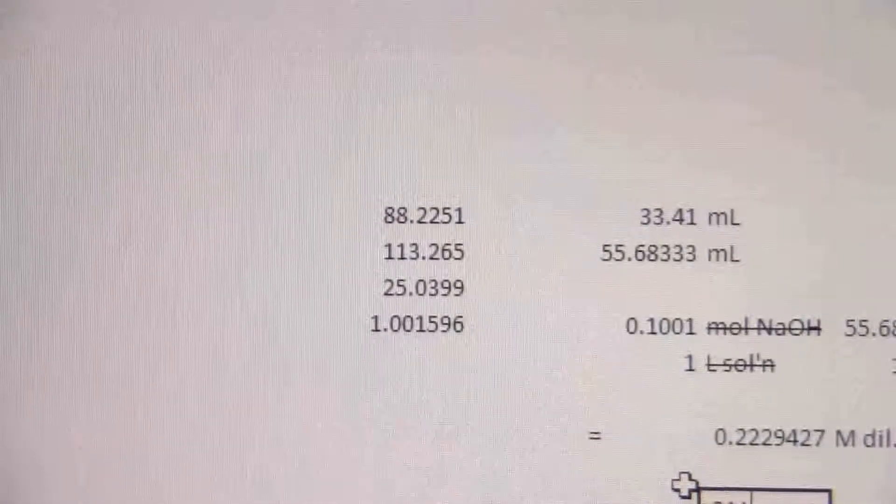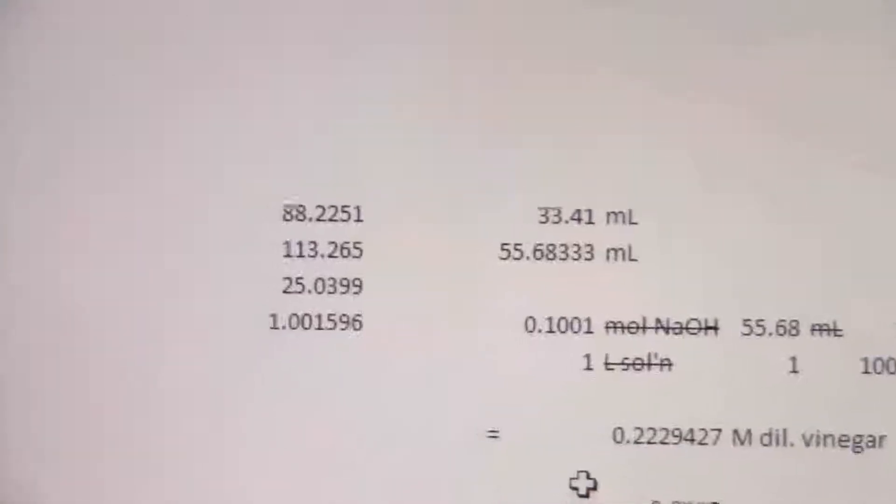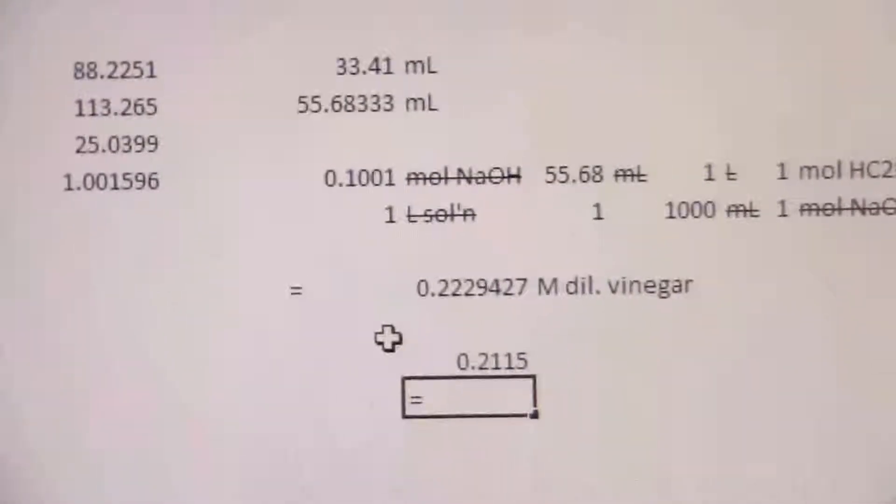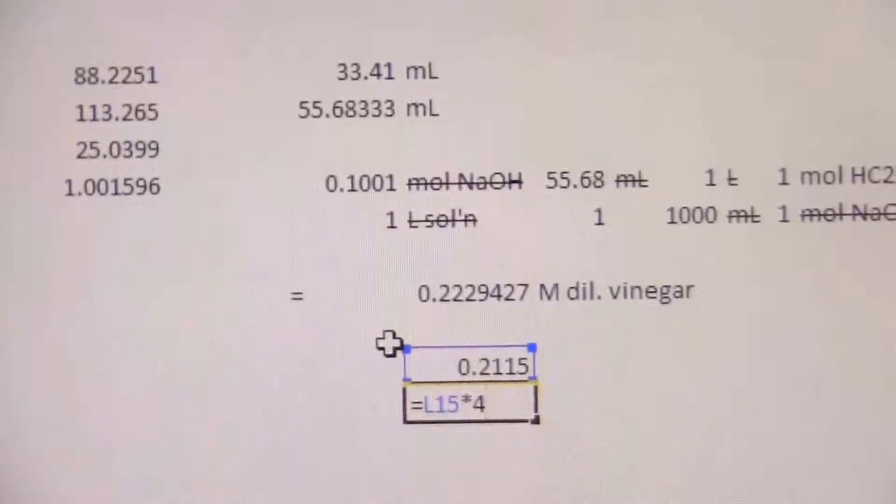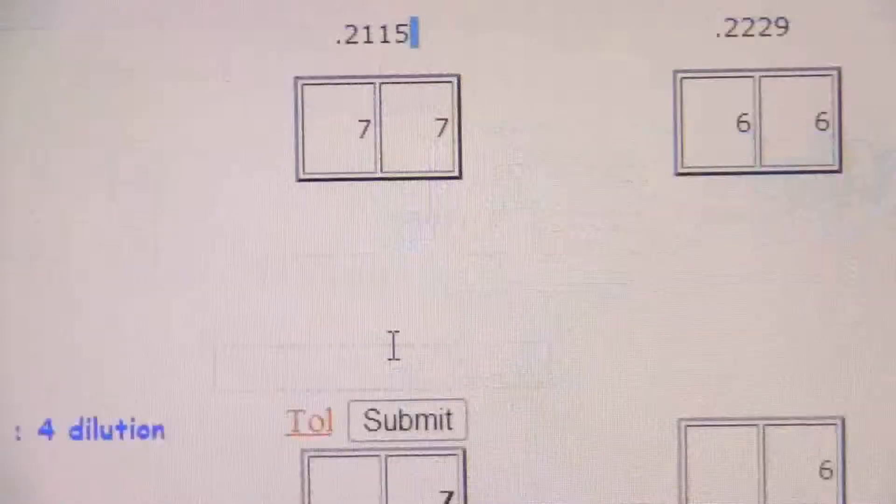So if the dilute vinegar has a molarity of 0.2115, then I just multiply that by 4. I'm going to go ahead and introduce a little rounding error here, put that in and multiply by 4 because it's going to be 4 times more concentrated, so 0.846.